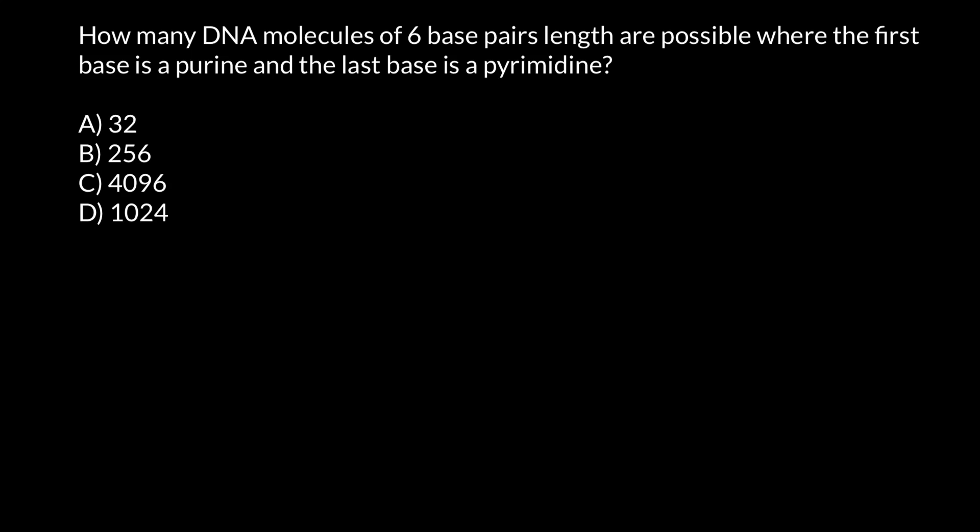Hello and welcome to Nikolai's genetics lessons. Today's question I got from one of my subscribers: How many DNA molecules of six base pairs length are possible where the first base is a purine and the last base is a pyrimidine?